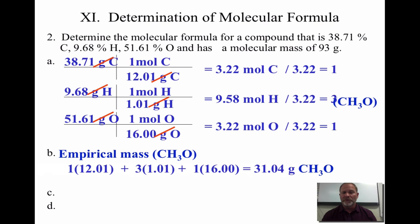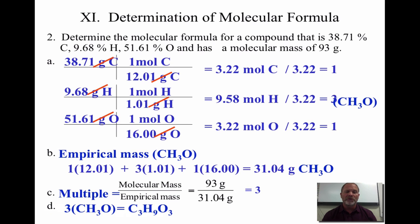So 93 divided by 31, I can see that right away, is a multiple of three. So I'm going to take that three and distribute it back through my CH3O, and it's going to raise it up to C3H9O3. That's my molecular formula.